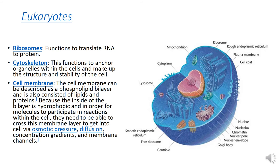Ribosomes function to translate RNA into protein. Ribosomes are also found in the endoplasmic reticulum. The cytoskeleton functions to anchor organelles within the cells and makes up the structure and stability of the cell.